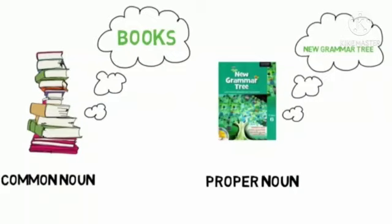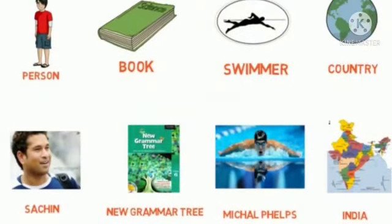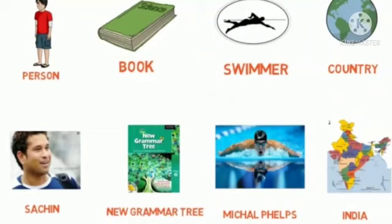Here are more examples. 'Person' is a common noun, but 'Sachin' is a proper noun. 'Book' is a common noun, but 'New Grammar Book' is a proper noun. 'Swimmer' is a common noun, but 'Michael Phelps' is a proper noun. 'Country' is a common noun, but when we talk about a specific country like India, that becomes a proper noun.